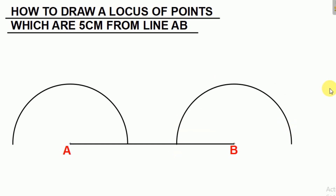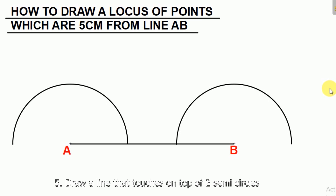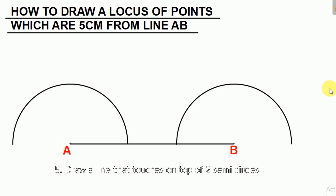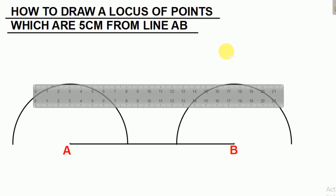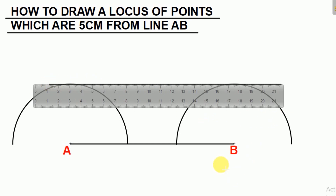Then our fifth step, draw a line that touches on top of the two semi-circles. So we need to draw a line that will touch these two semi-circles. For that we're going to use our ruler, put it there, and draw the line that touches both semi-circles. So we have done that.